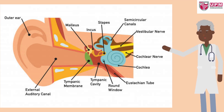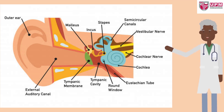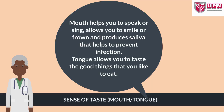Signals sent to the brain from the auditory nerve are then interpreted as sounds. Sense of taste. The mouth helps you to speak or sing, allows you to smile or frown, and produces saliva that helps to prevent infection. It also allows you to taste the good things that you like to eat.